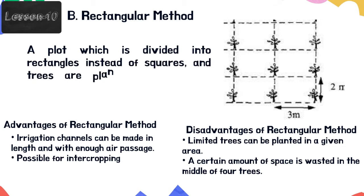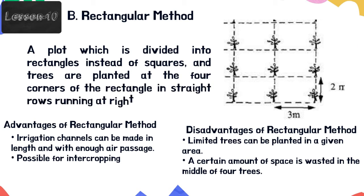Rectangular method: a plot is divided into rectangles instead of squares, and trees are planted at the four corners of the rectangle in straight rows running at right angles. The same advantages mentioned in the square method are also enjoyed here. The only difference is that more plants can be accommodated by keeping more space between the rows. Advantages: irrigation channels can be made in length with enough air passage and possible for intercropping. Disadvantages: limited trees can be planted in a given area, and a certain amount of space is wasted in the middle of four trees.